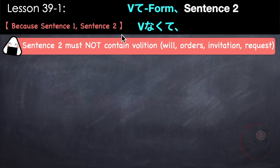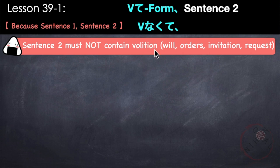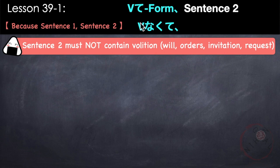In English, it doesn't matter where the reason is — it might be at the beginning or end of the sentence. The key difference between this pattern and から is that sentence two must not contain volition. Volitional sentences express will, orders, telling someone to do something, invitation, or requests. If sentence two does not contain these, you can use this pattern. Otherwise, use から.